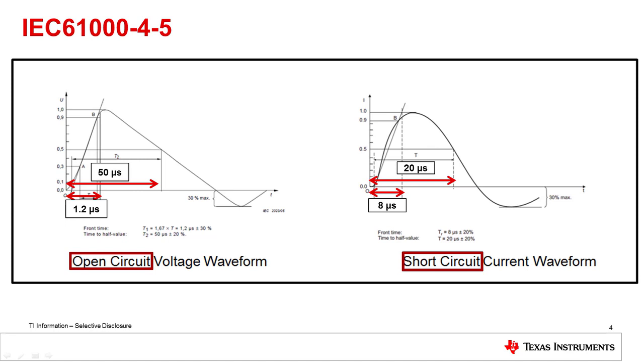The surge tester, by definition, has a 2 ohm output impedance, so the voltage peak waveform will be twice the magnitude of the current waveform peak. To pass the IEC 61000-4-5 standard, a system must have this waveform applied to the system inputs with no damage sustained.